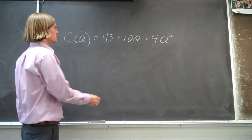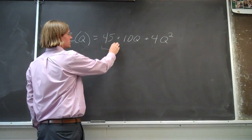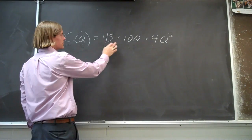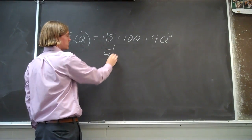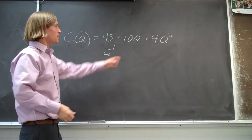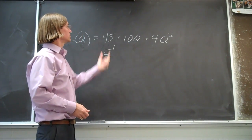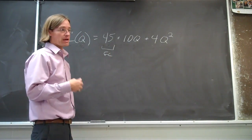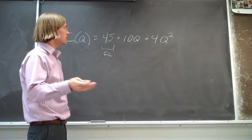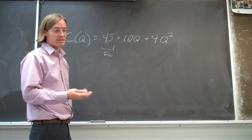The fixed component of this cost function is the 45, so that's your fixed cost. It doesn't matter what quantity is, you're always going to have that 45 bucks that you've got to pay in fixed cost, independent of the quantity that you're producing.